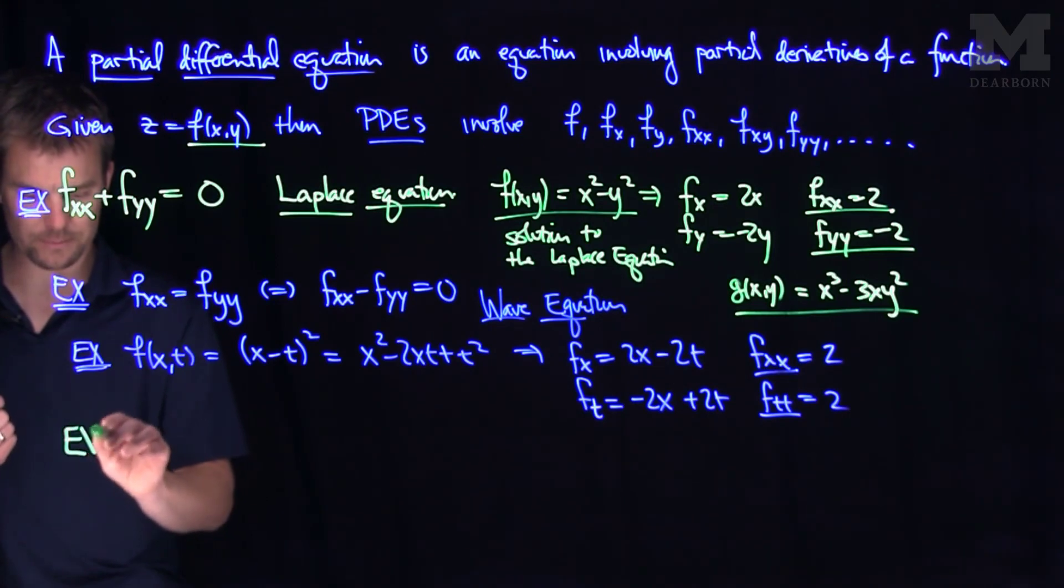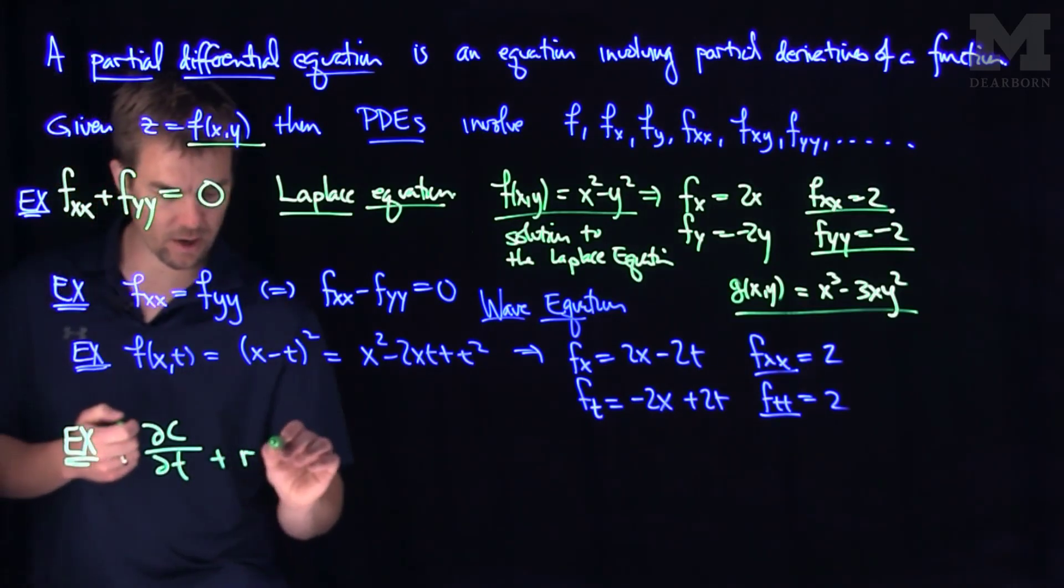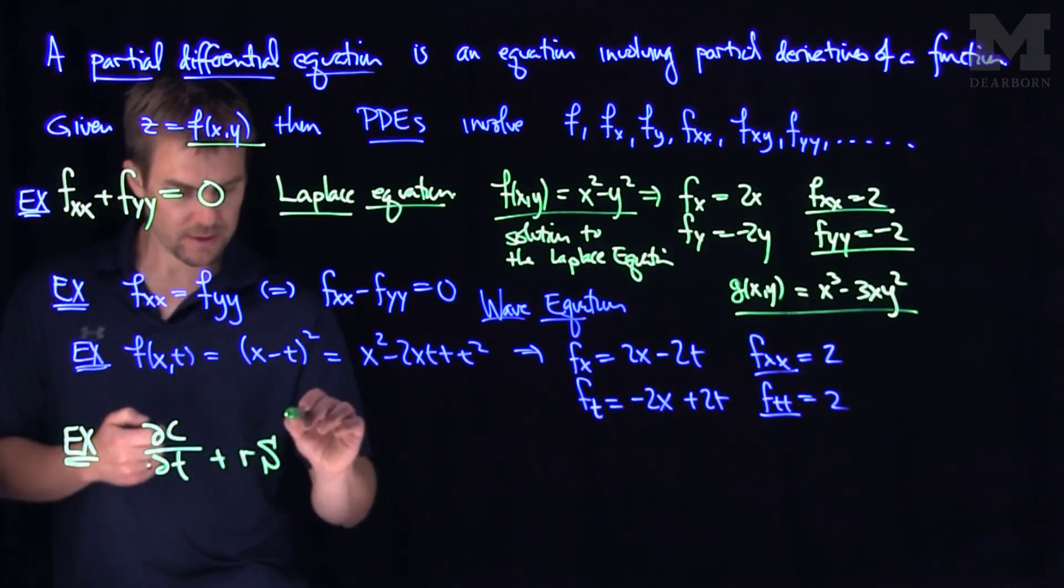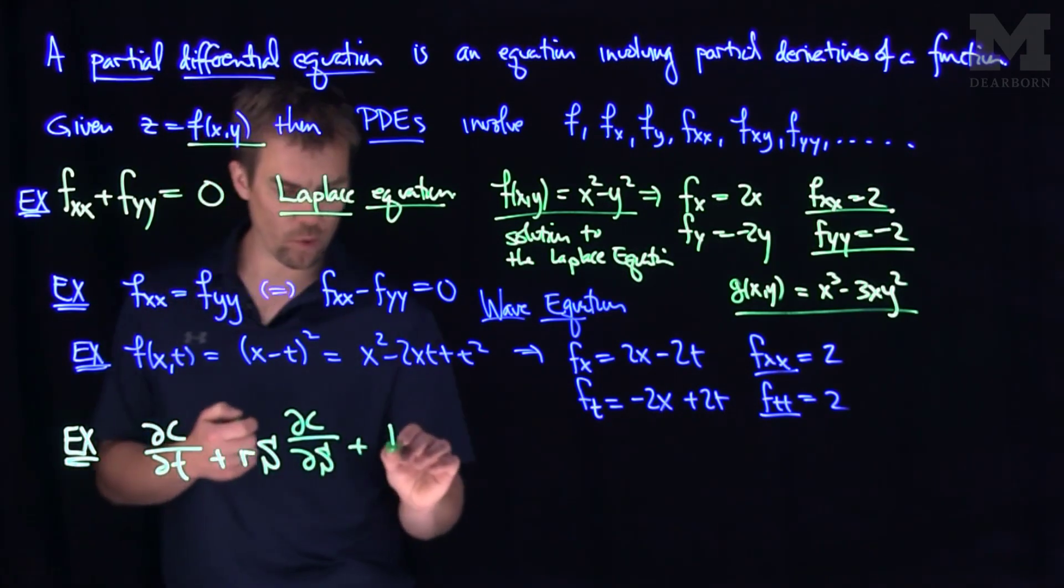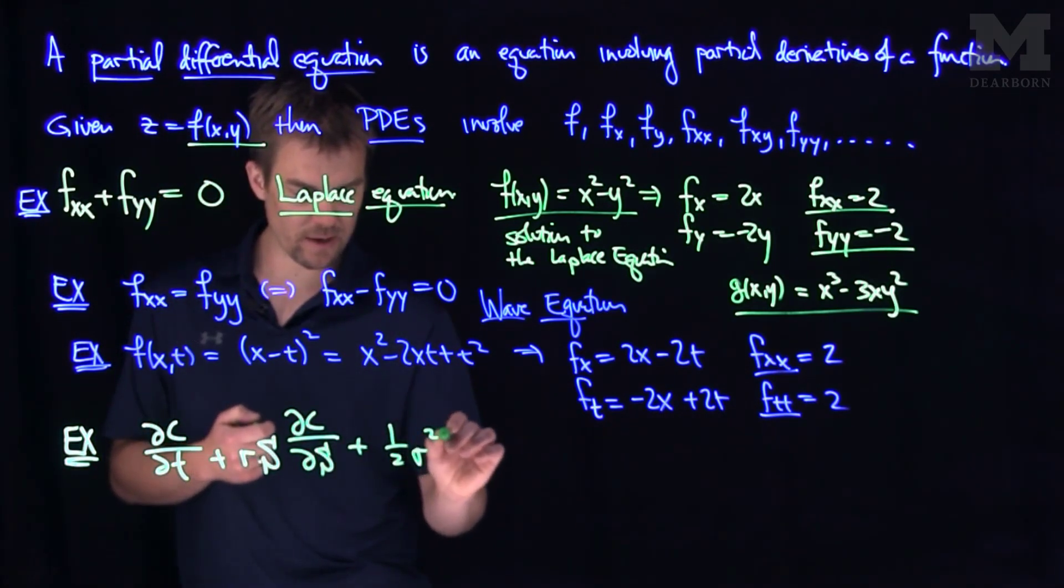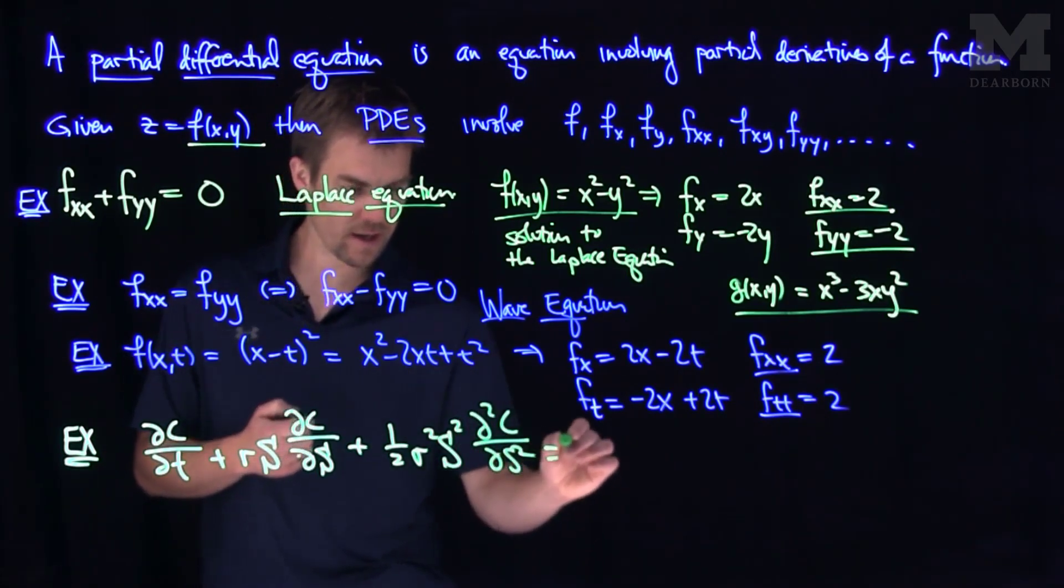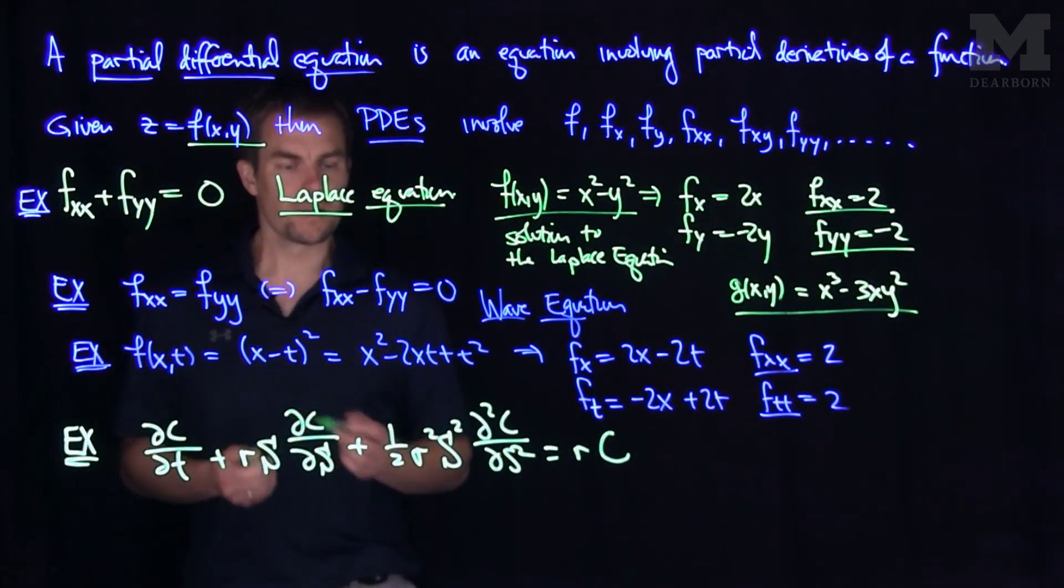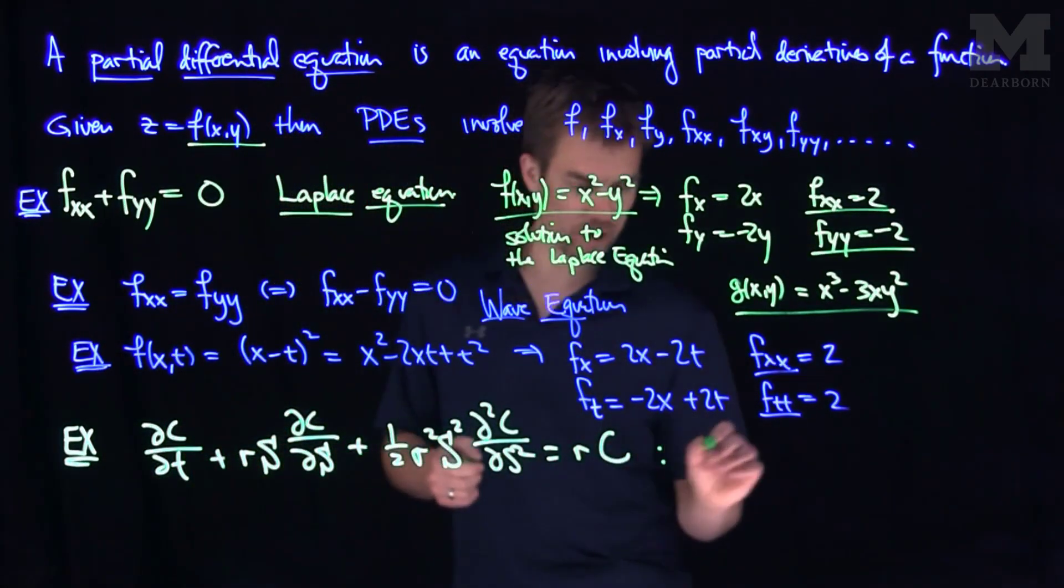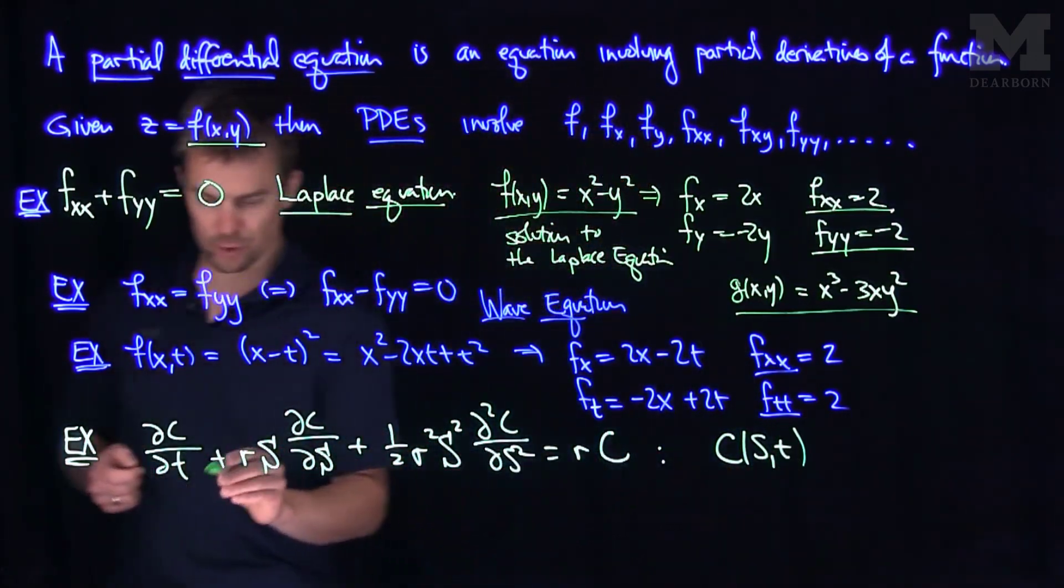I can give you one more example of a PDE. If I look at dc dt plus rs dc ds plus 1 half sigma squared s squared d squared c ds squared is equal to r times c. This partial differential equation for a function c of both s and t is the Black-Scholes equation.